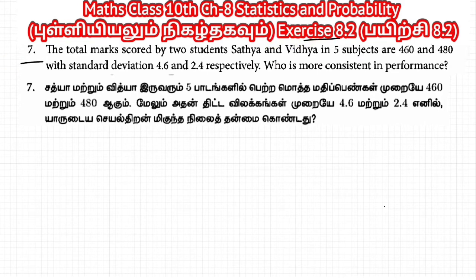The total marks scored by two students Sathya and Vidya in five subjects are 460 and 480 with standard deviation 4.6 and 2.4 respectively. Who is more consistent in performance?